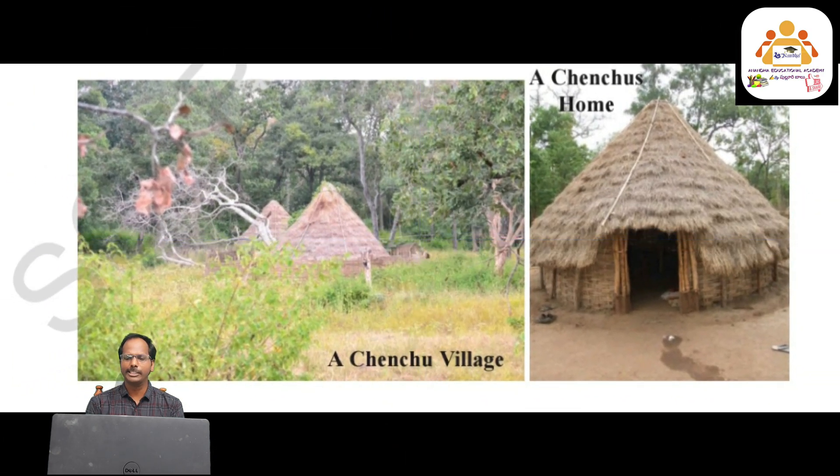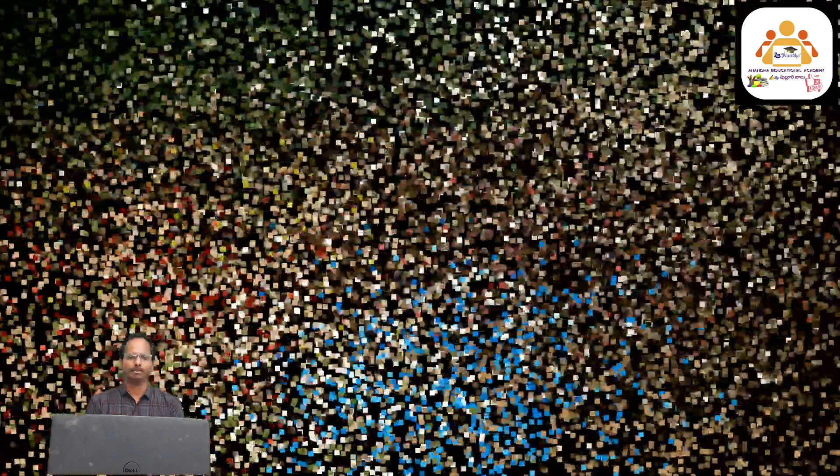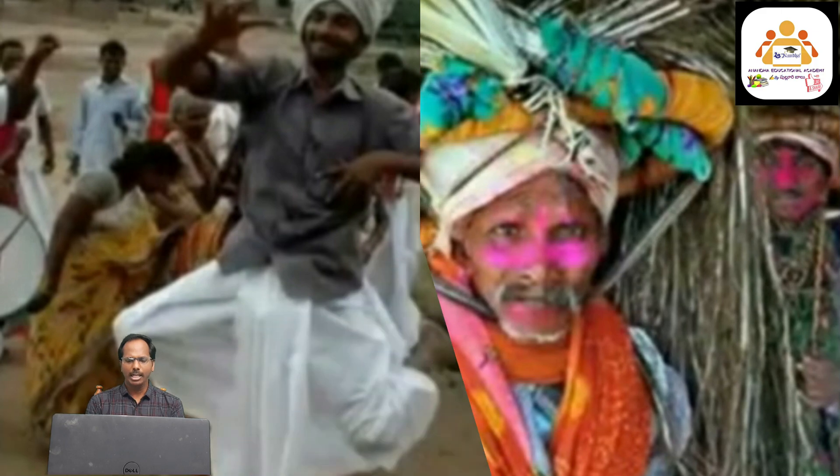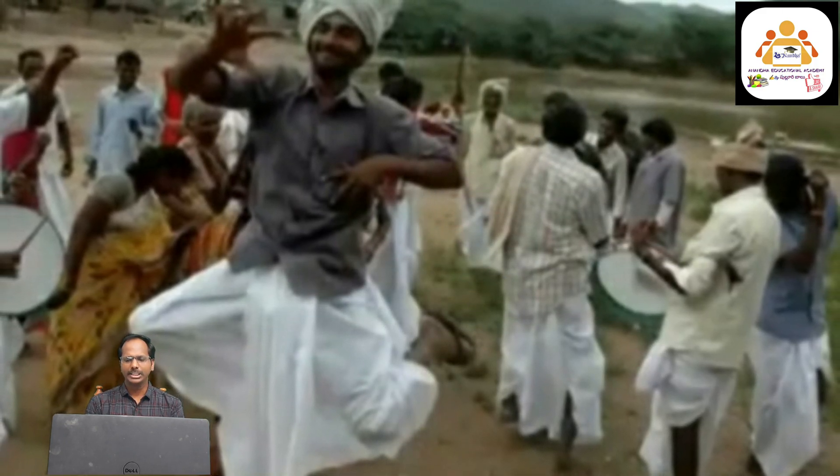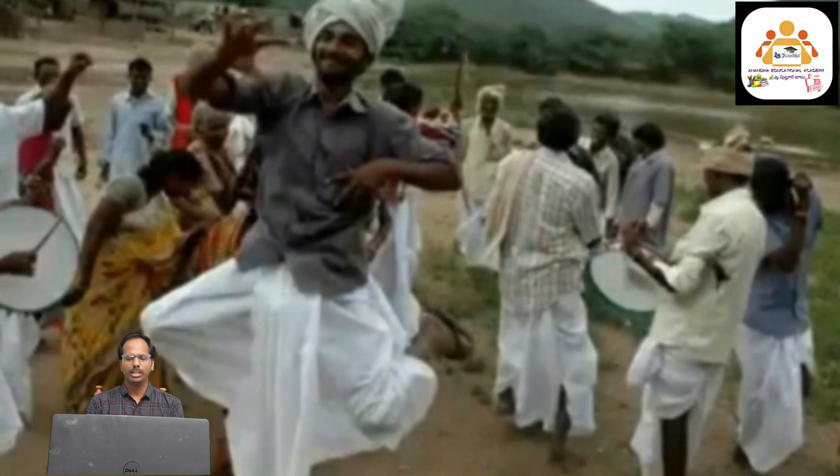Chenchus and their relatives live together, constructing huts at a place called a penta. A few pentas together form a village. Each village has a head called the headman or peddamanishi. He looks after the village and ensures all follow customs and traditions. All the people respect and follow the directions given by the headman. All village programs are conducted under his guidelines.